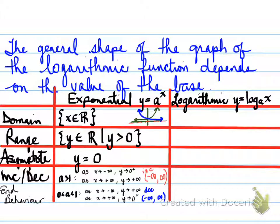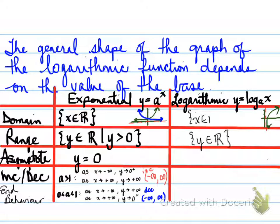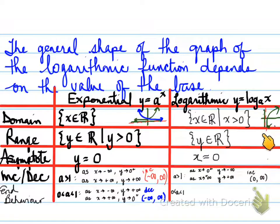Now for the logarithmic equation — since a logarithm is the inverse of an exponential, what was originally the domain becomes the range, and what was originally the range becomes the domain. Looking at the graph, the asymptote is now on the y-axis at x equals 0. As x approaches 0 from the positive side, y approaches negative infinity. As x approaches positive infinity, y approaches positive infinity. This function is increasing from 0 to infinity, not including 0.